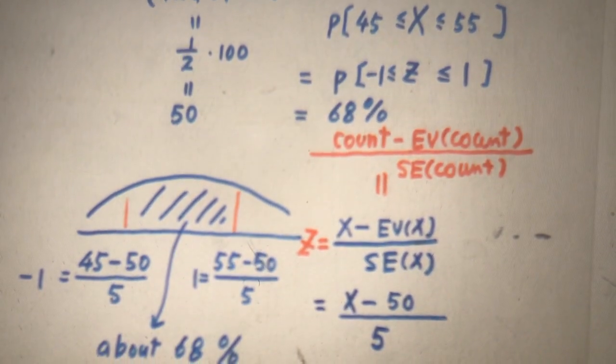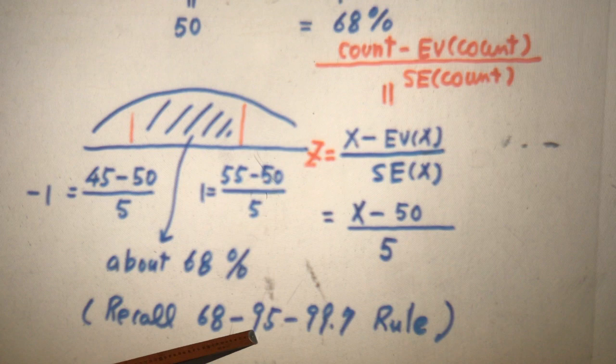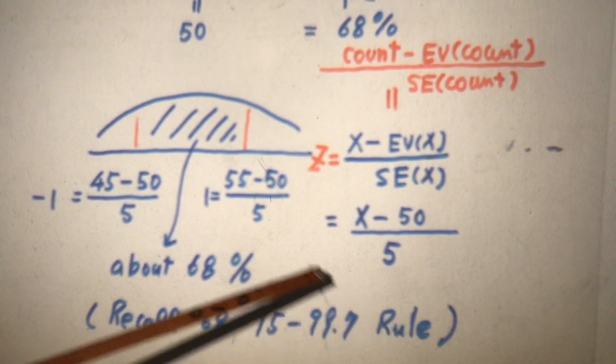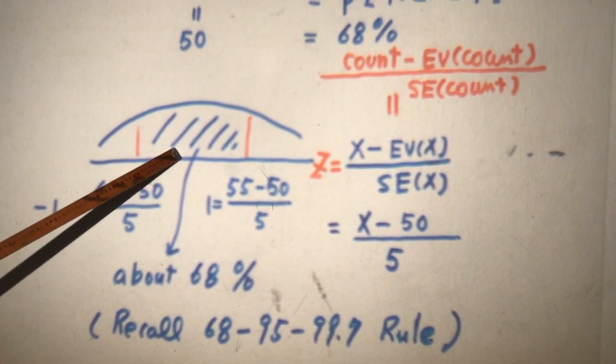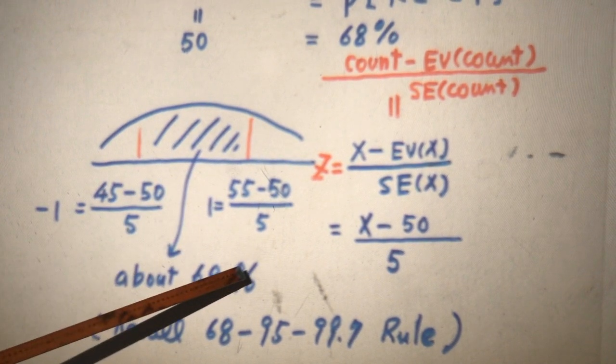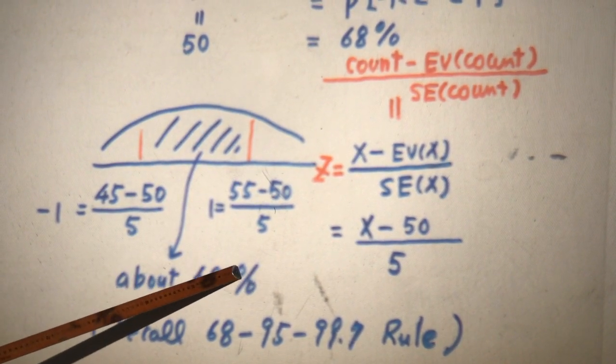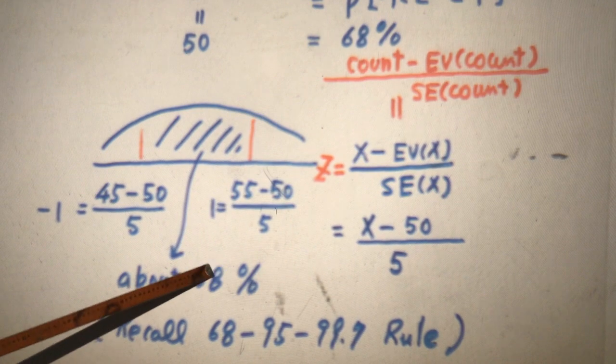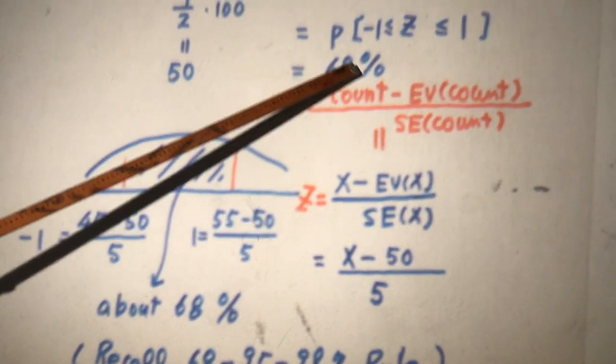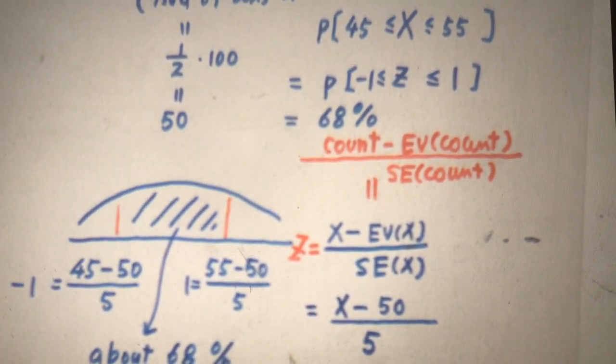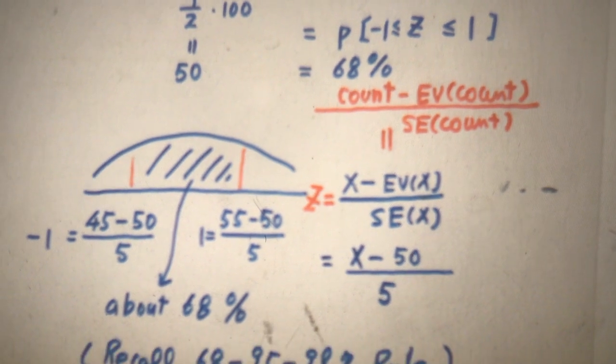And what do you know about 68, 95, 99.7 rule? It says 1 sigma within the center cover about 68% in a normal curve. So the answer we're looking for is roughly 68%. This is what we call central limit theorem.